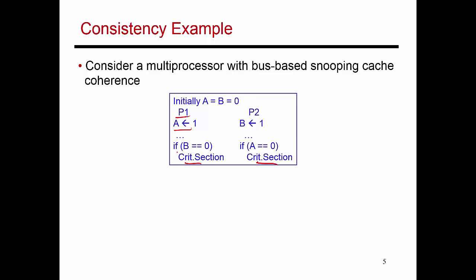Then P1 checks to see if B equals 0 or 1 — checking whether the other thread is also trying to enter the critical section. Symmetrically, the other thread sets B equals 1 to express its intent, then checks if the other thread is also trying to enter. If the other thread is not trying, it is safe to execute the critical section. If the check fails, you'd loop back and try again.